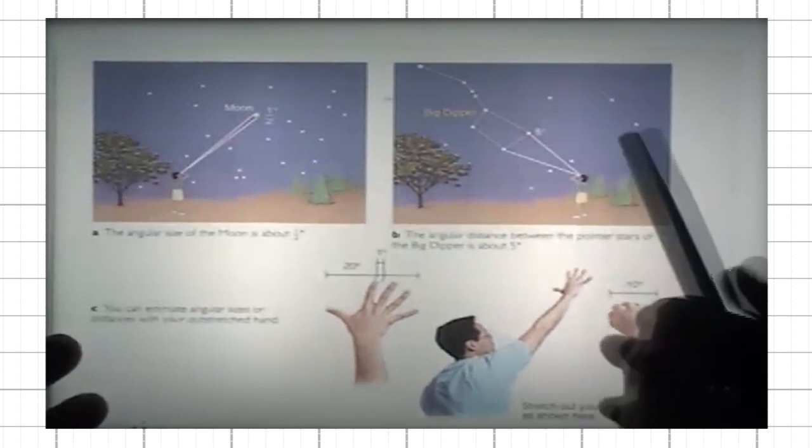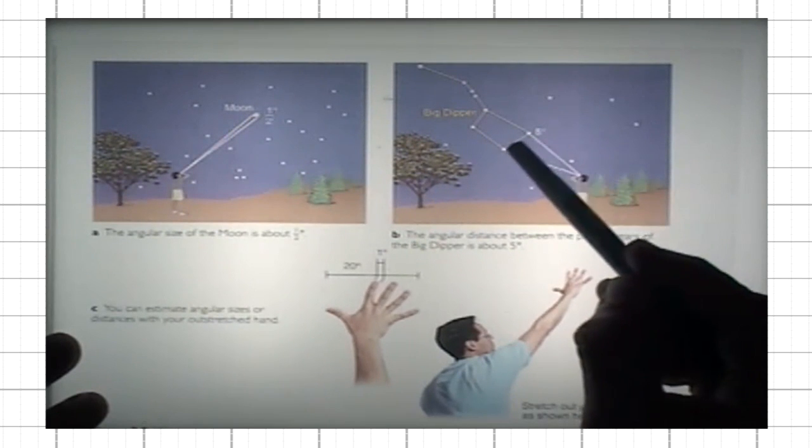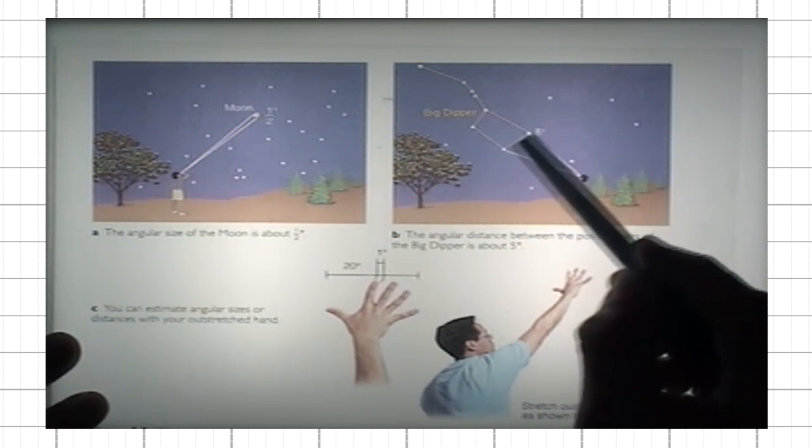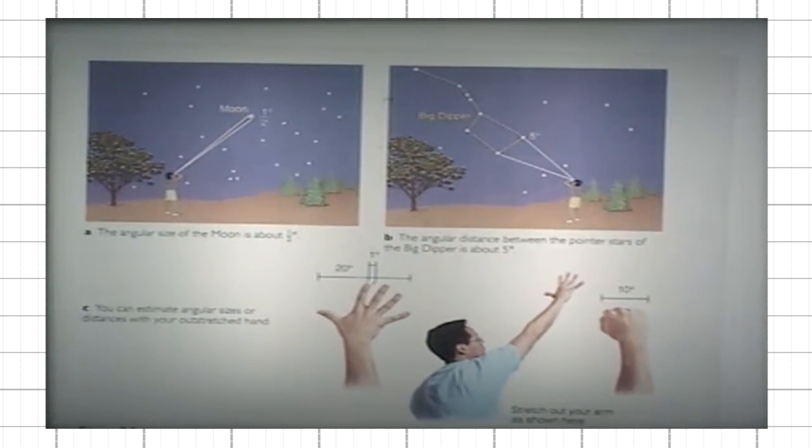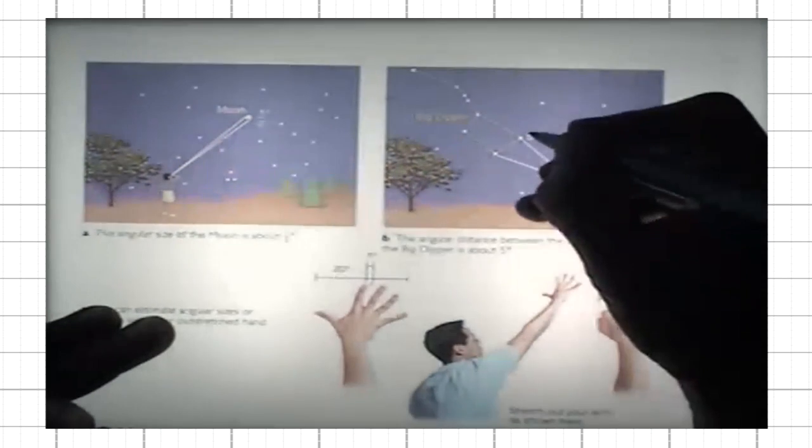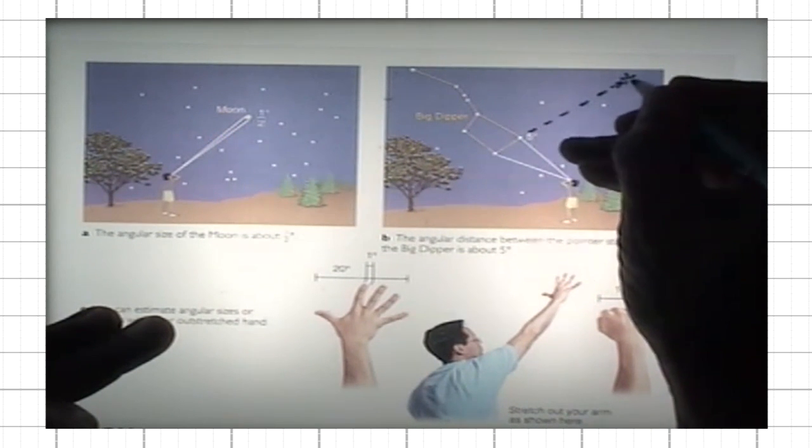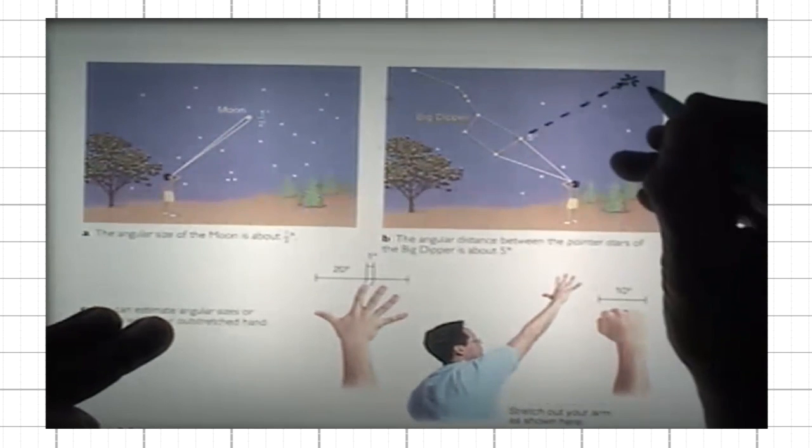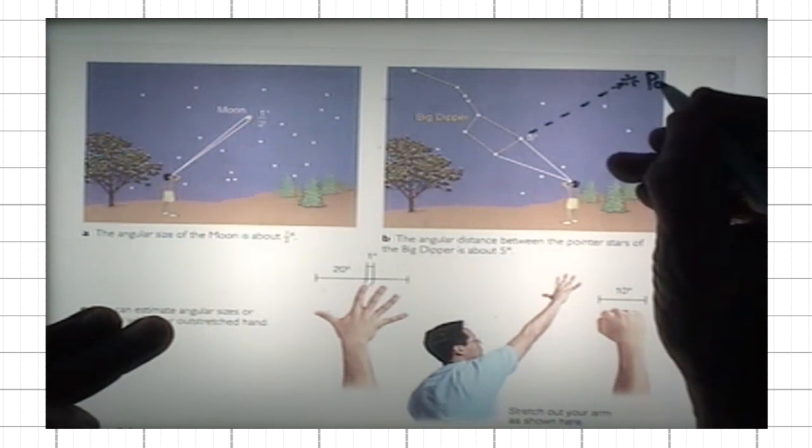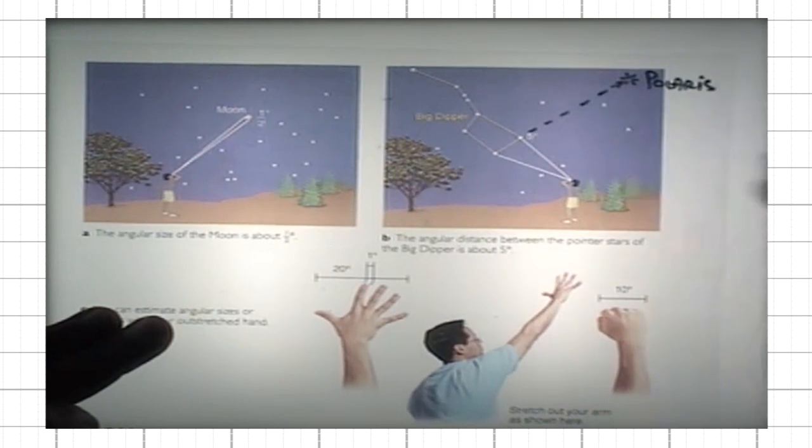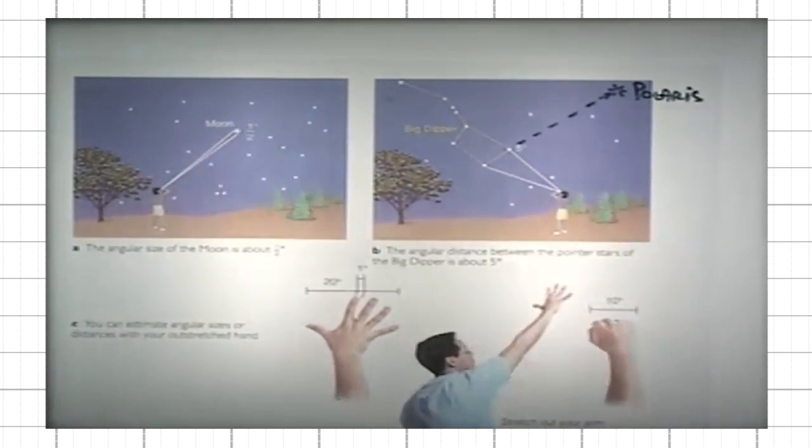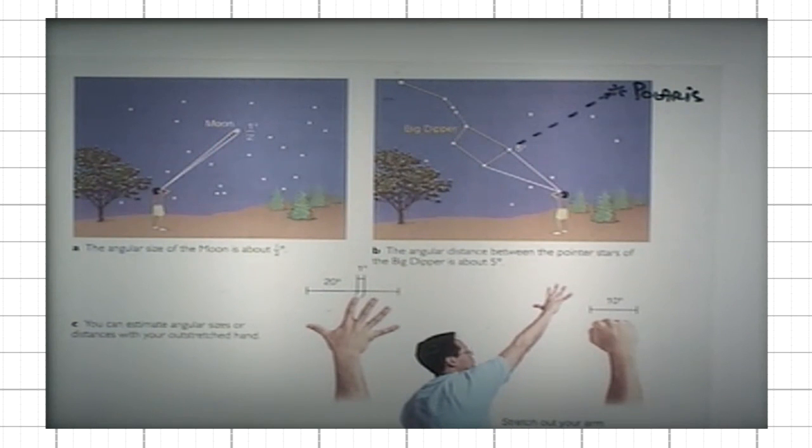For instance, here you can determine that the distance between these two so-called pointer stars in the Big Dipper. Remember, if you continue in this direction and look at the star that is at the end of the handle of the Little Dipper, that's what Polaris is. The angular distance between these two pointer stars is five degrees.